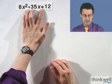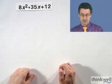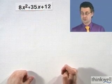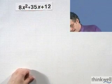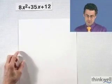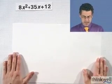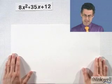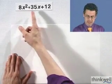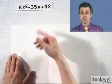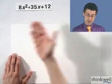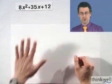8x² + 35x + 12. And I want to factor that bad boy. So what do I do first? Well, the first thing I do is I see if there is a greatest common factor of 8, 35, and 12 that's bigger than 1. And I see there isn't anything I can factor out. So I'm all set with that.